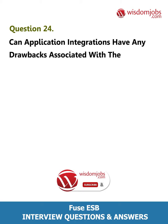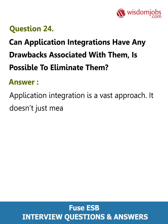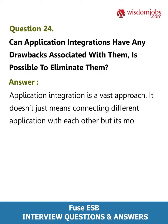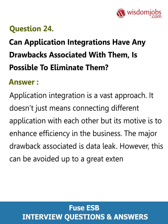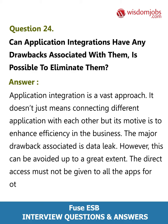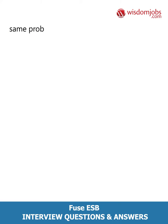Question 24: Can application integration have any drawbacks associated with it, and is it possible to eliminate them? Answer: Application integration is a vast approach — it doesn't just mean connecting different applications with each other, but its motive is to enhance efficiency in the business. The major drawback is data leak; however, this can be avoided by not giving direct access to all apps for other apps until they make a request for the same.